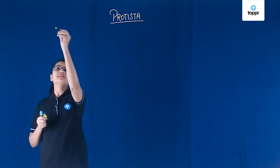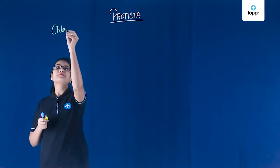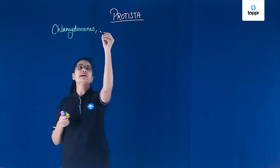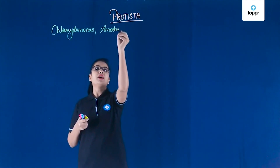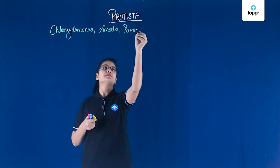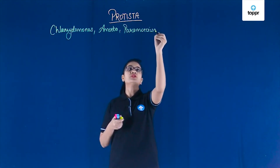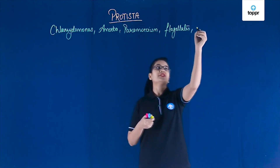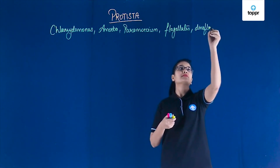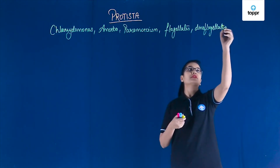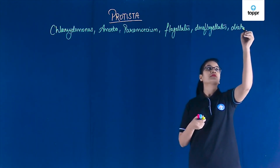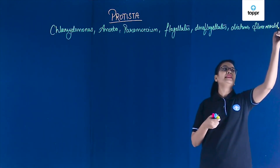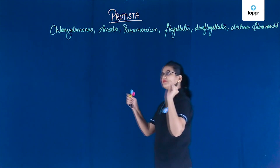The common examples of Kingdom Protista include Chlamydomonas, Chlorella, Amoeba, Paramecium, Flagellates, Dinoflagellates, Diatoms, Slime Molds, Euglena, and many other organisms.